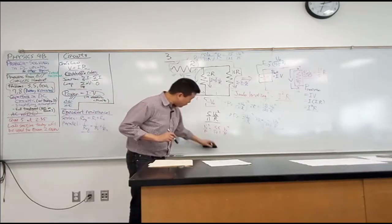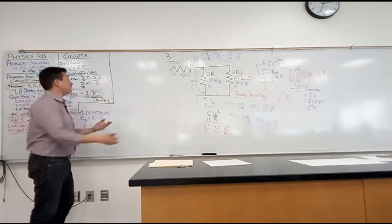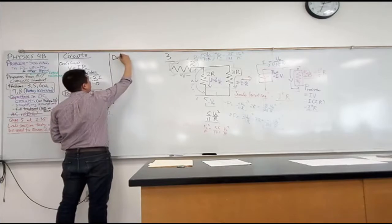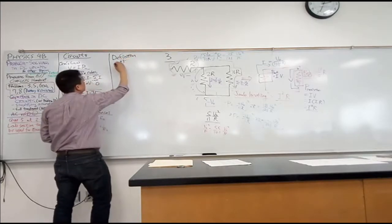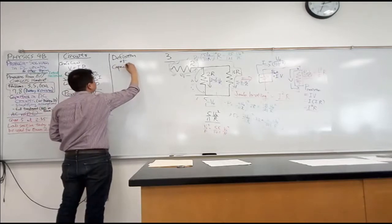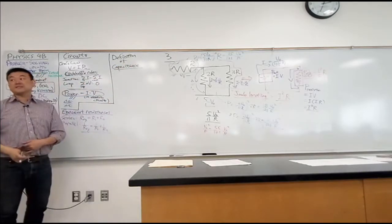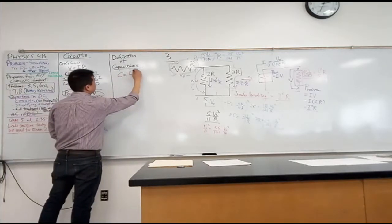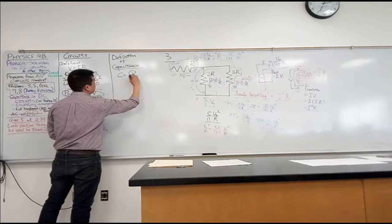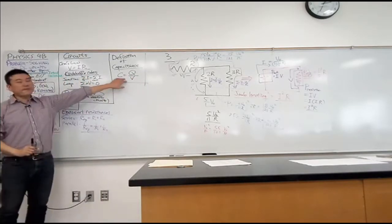With the capacitors, this is the one relationship to remember. I call the definition of capacitance. Capacitance C, it was defined as amount of charge Q that you store per some voltage V that you apply. Does this look familiar?